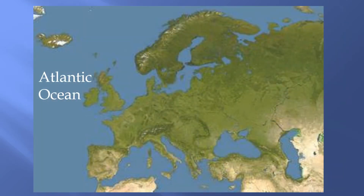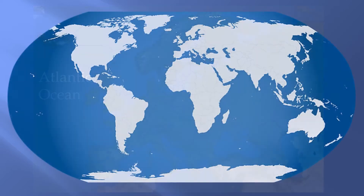But the seas are all part of the oceans. Looking at this map, you can see that Earth has one continuous body of water which has been separated into different areas of seas and oceans.